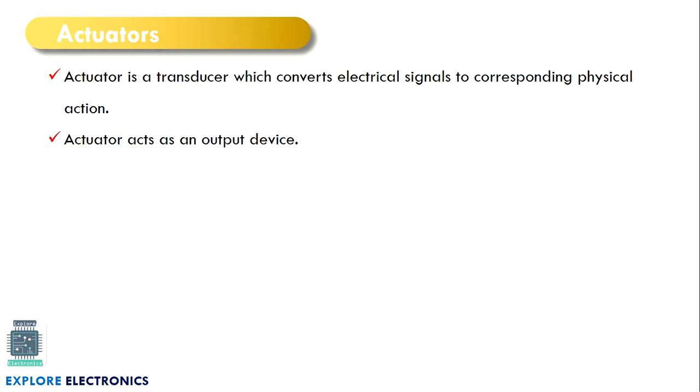What is an actuator? An actuator is a transducer which converts an electrical signal into physical action. Actuator is exactly doing the reverse operation compared to a sensor. A sensor will sense the physical quantity and convert that into an electrical signal, but an actuator will take the electrical signal and convert it back to physical action.